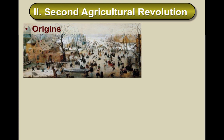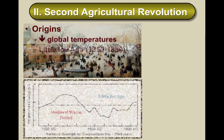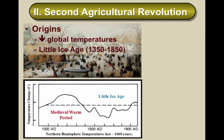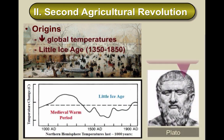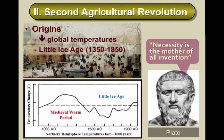The origins of the Second Agricultural Revolution are actually quite similar to the origins of the First Agricultural Revolution — both were preceded by colder global temperatures. The Little Ice Age was a period of colder global temperatures beginning around 1350 and lasting until around 1850. These colder temperatures shortened growing seasons, reducing farm productivity as well as the amount of food available per person, leading to famines, starvation, and death. This in turn led to necessary innovations to provide new means of producing food for survival — fitting perfectly with Plato's famous quote that necessity is the mother of all invention.